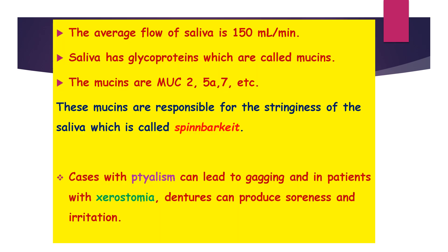The average flow of saliva is 150 ml per minute. Saliva has glycoproteins called mucins, and the major mucins are MUC2, MUC5A, MUC7, etc. These mucins are responsible for the stringiness of the saliva, which is called spinnbarkeit. Cases with excess saliva can lead to gagging, and in patients with xerostomia, dentures can produce soreness and irritation.